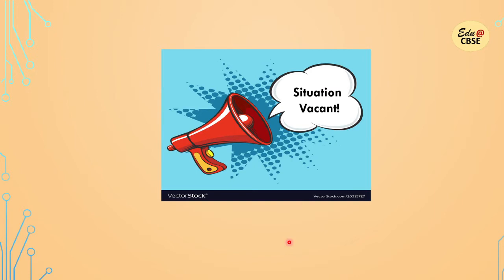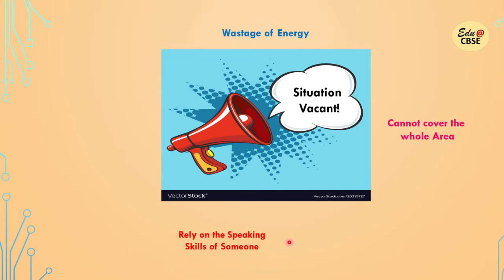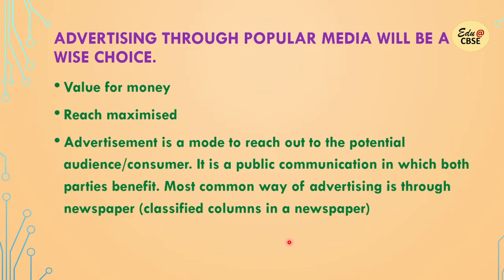We have a situation vacant and we can announce that we have a situation vacant. But this is a wastage of energy — this way we won't be able to cover the whole area, and we have to rely on the speaking skill of the person. It is time-consuming also. So what actually should be done? Advertising through popular media — that is a wise choice. It is value for money and reach will be maximized, reaching potential people over a wide area.